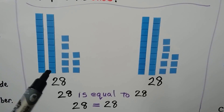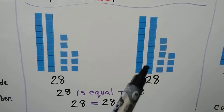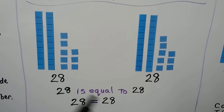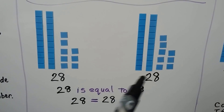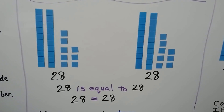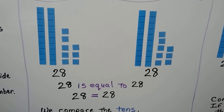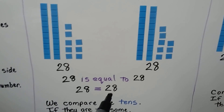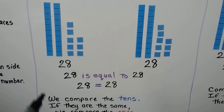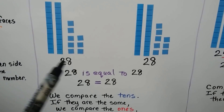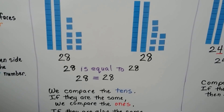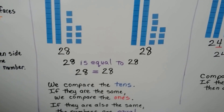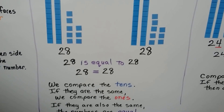Here we have two tens and here we have two tens. We have eight ones and we have eight ones — 28 and 28. 28 is equal to 28; it's the same number. We compare the tens; if they are the same, we compare the ones, and if they're the same, the numbers are equal.